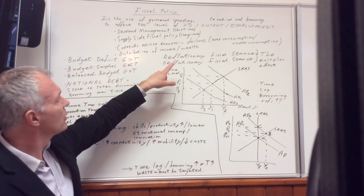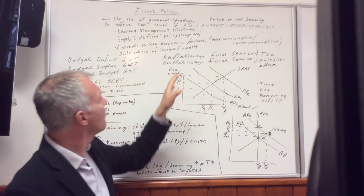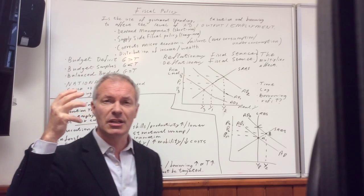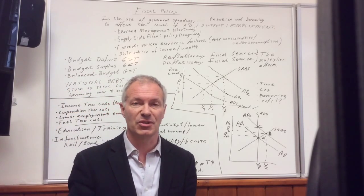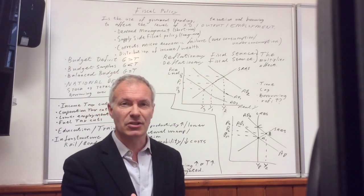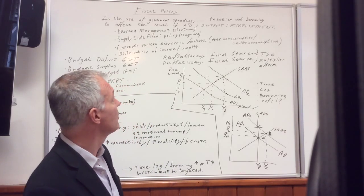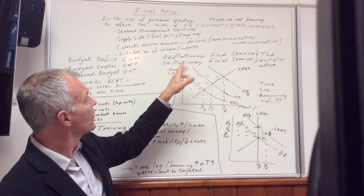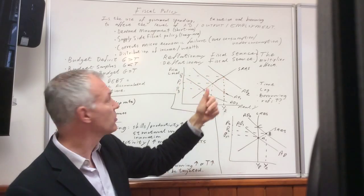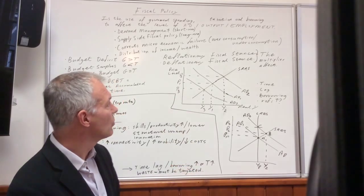What we also need to know is what is a reflationary fiscal stance. That is simply when the government boosts aggregate demand by cutting taxation and/or increasing government expenditure. A deflationary fiscal stance is simply the opposite. The government increases taxes and/or reduces government expenditure. That's often called an expansionary or contractionary fiscal policy.